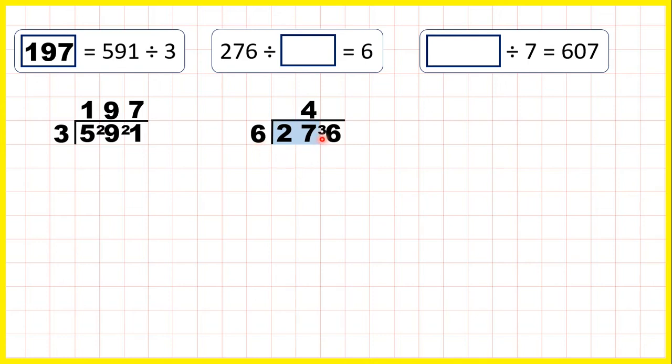So now we have 36 divided by 6, which is exactly 6, because 6 times 6 is 36. So our missing divisor is 46.